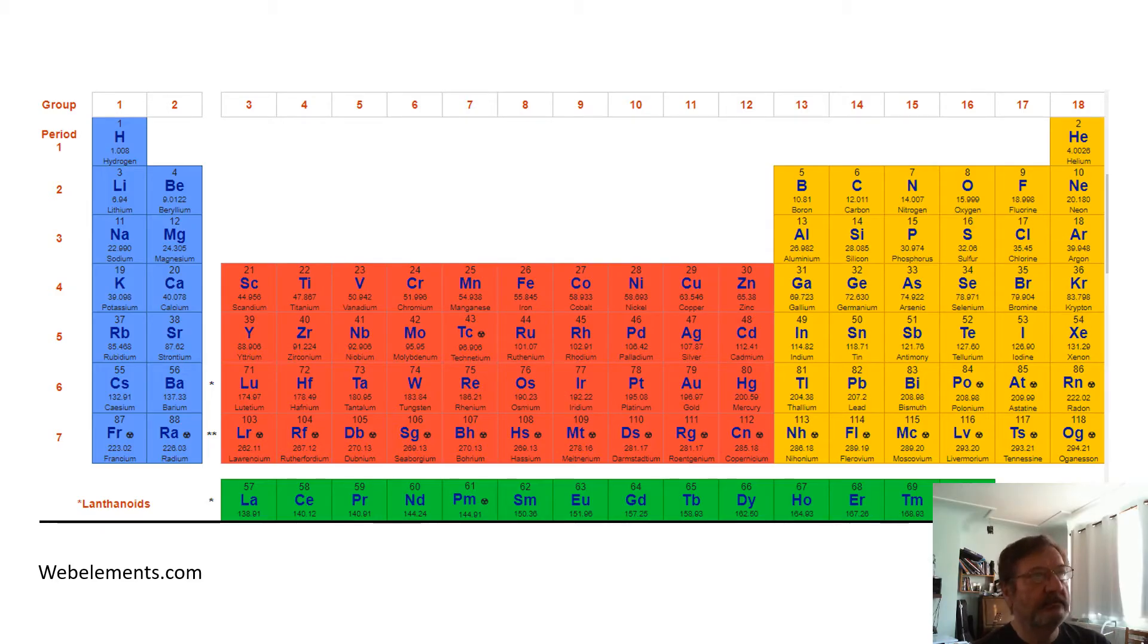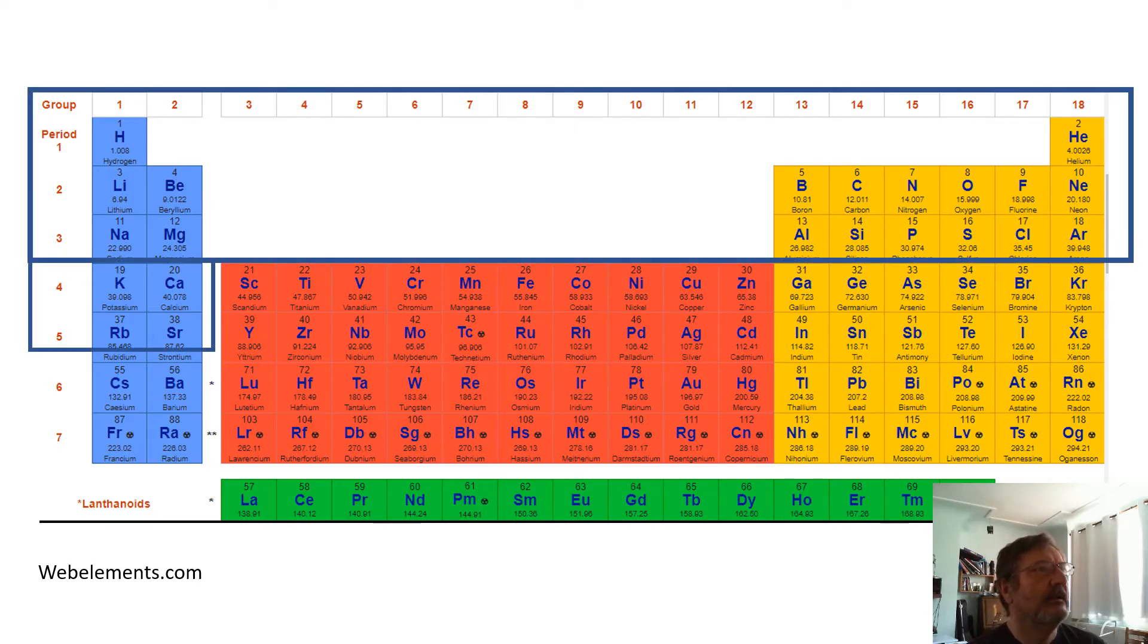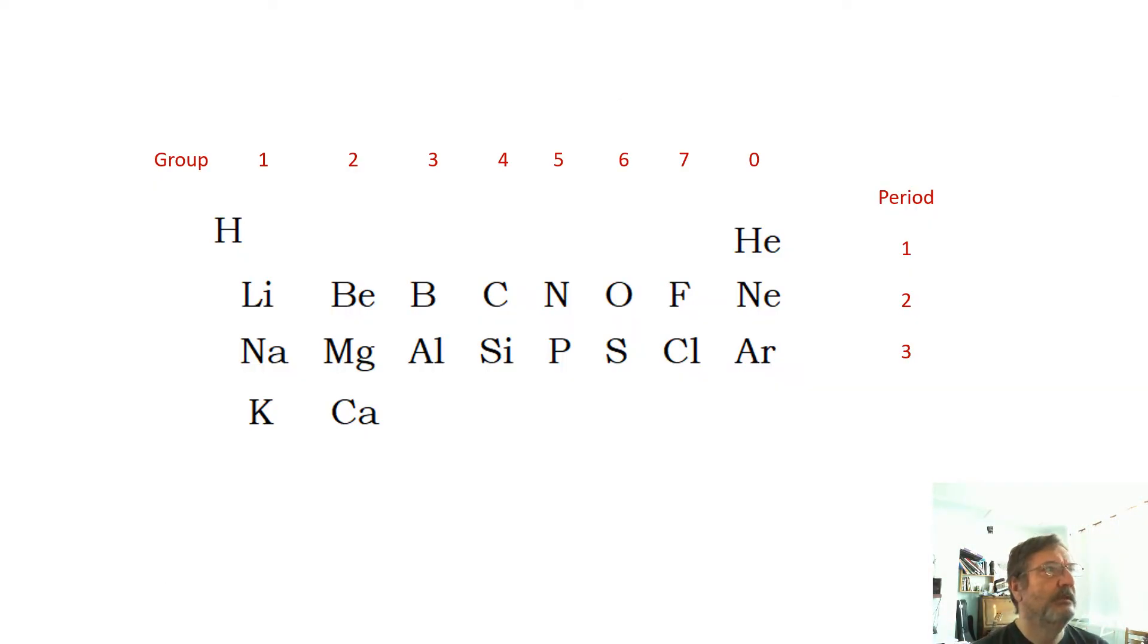The good news is we don't need all of that. All we really need for 90% of what we need to know is just the first 20 elements. If you learn the first 20 elements and whereabouts they are in the periodic table, so much stuff you can just figure out, as I hope to show you in this video.